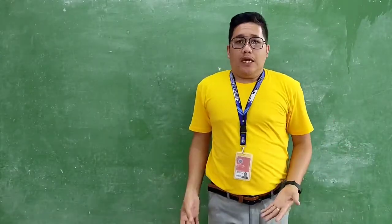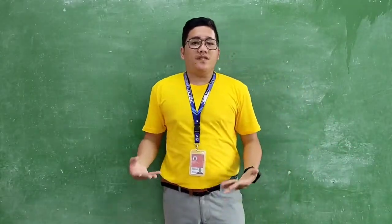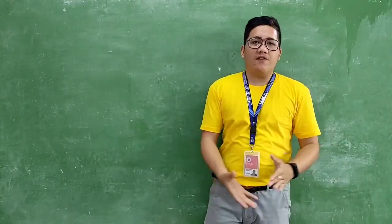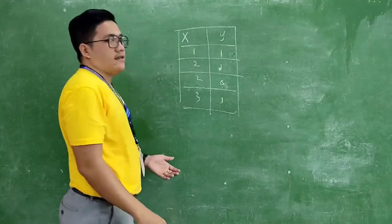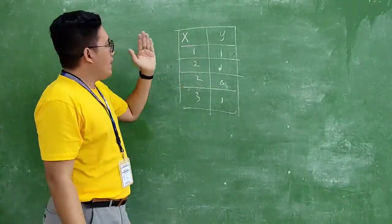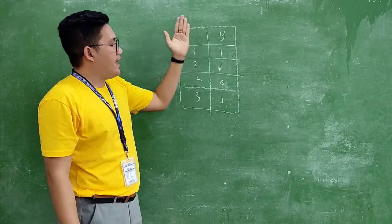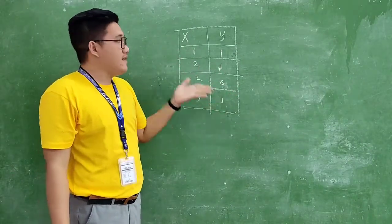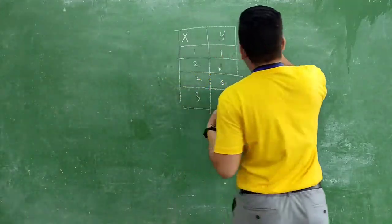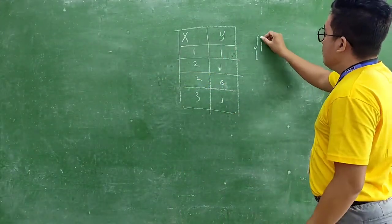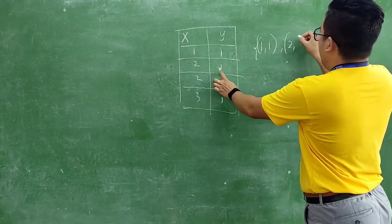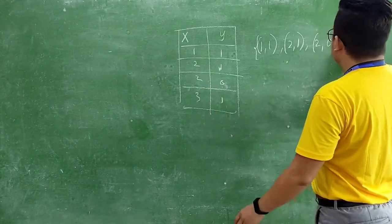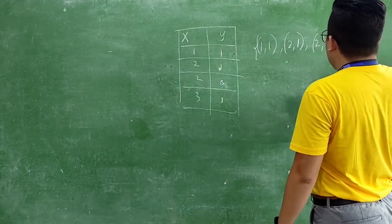When we talk about relation, it is relationships between a set of values of ordered pairs. Say for instance, we have here a mapping diagram with x and y values. This is a relation. We have ordered pairs: 1 and 1, 2 and 1, 2 and 0, and 3 and 1.